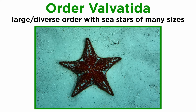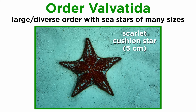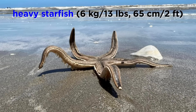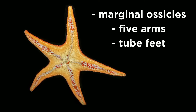And finally order Valvatida, which is large and diverse, includes small species like the scarlet cushion star, only five centimeters in diameter, all the way up to the heavy starfish, which can weigh more than six kilograms, or thirteen pounds, and grow to lengths of more than sixty-five centimeters, or two feet. They are characterized by their marginal ossicles, and adults often have five arms with tube feet.